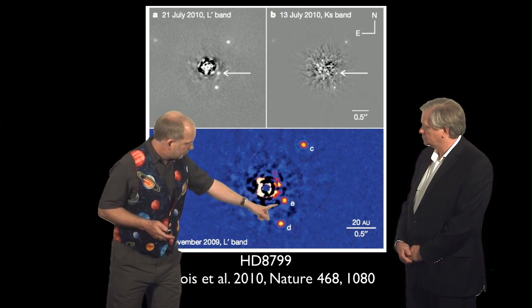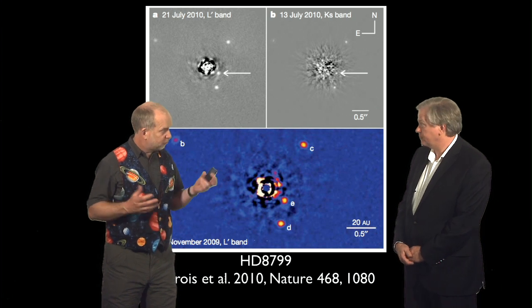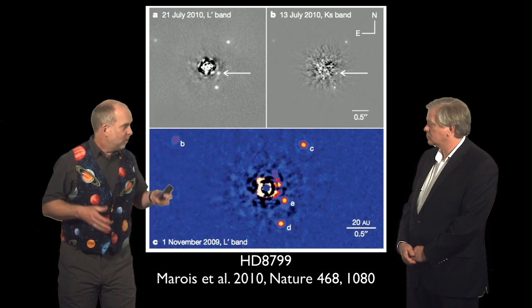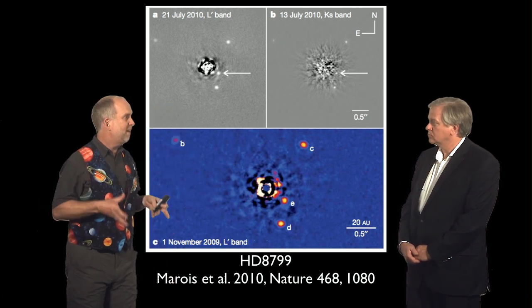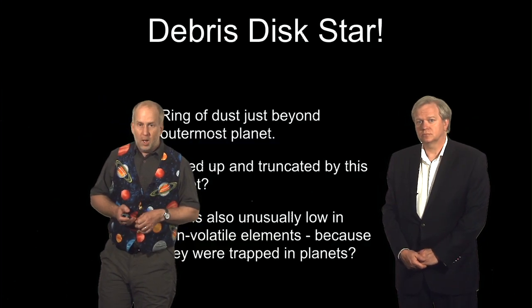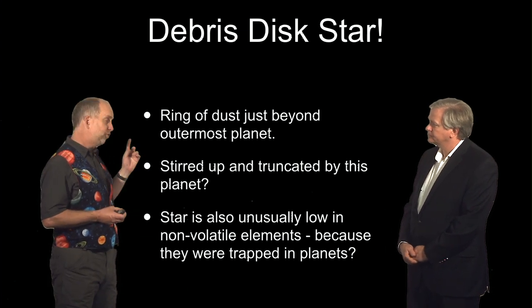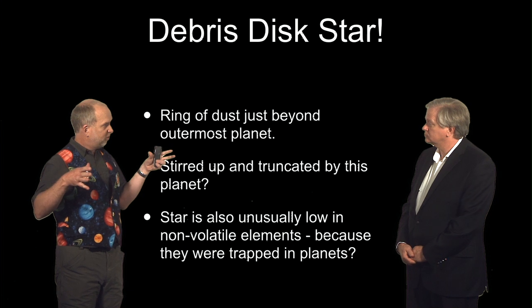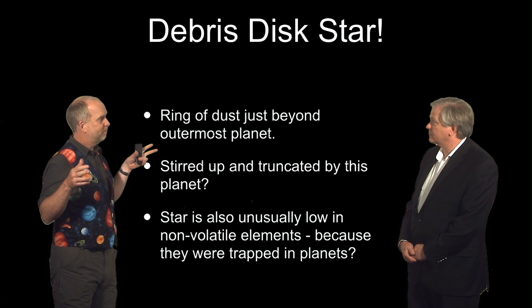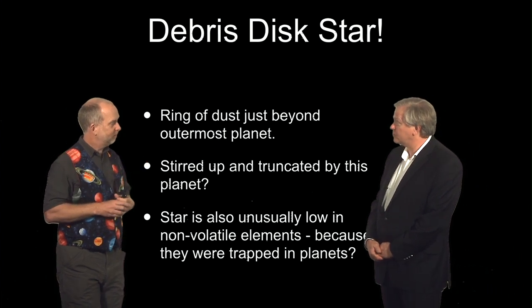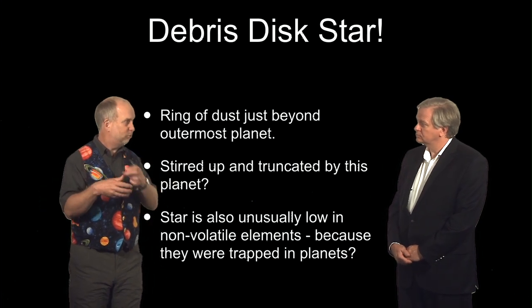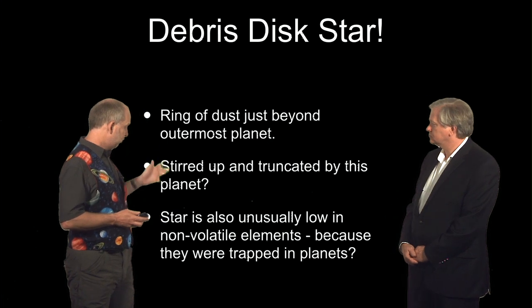The closest planet in is 14.5 astronomical units out — a little bit further out than Saturn is in our own solar system — and the other ones go considerably further out. So we are looking at something we haven't been able to see before: really massive things a long way out. The star also has a debris disk around it with an inner gap, and that inner gap is just outside where the planets are. These planets have cleared out the inner part of the debris disk and could be responsible for stirring up the big lumps of rock further out, making them crash into each other to produce the debris disk.